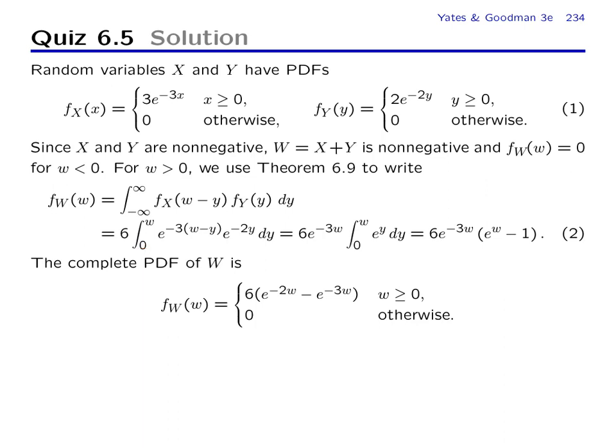Next, we observe that the PDF of x is 0 for x less than 0. And so this PDF is going to be 0 when w minus y is negative. And what that implies is that this function goes to 0 when y is greater than w. As a consequence, the upper limit of this integral is w.